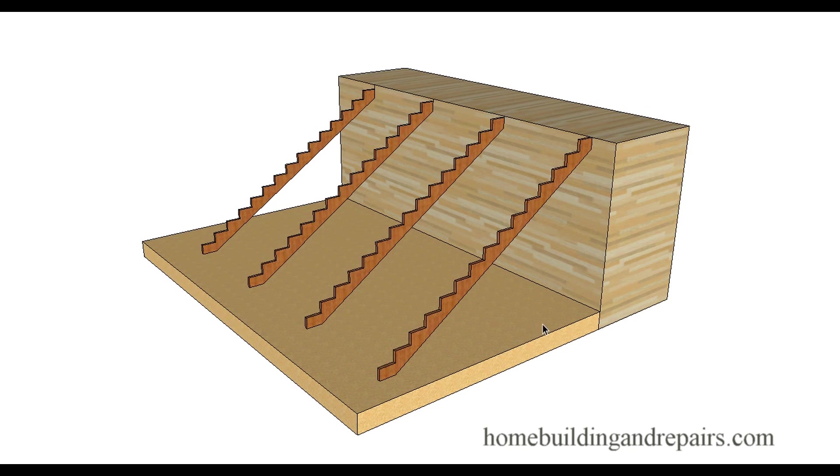The distance between floors is known as the total rise. So top of finished floor to top of finished floor is going to be your total rise. The number of risers—in this case we have 15 risers—divides into the total rise and this gives us our individual rise.